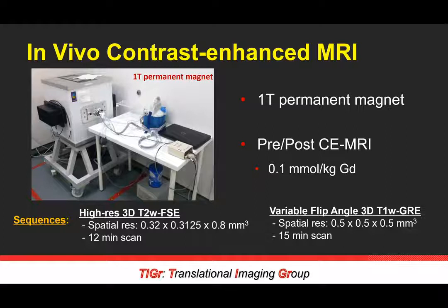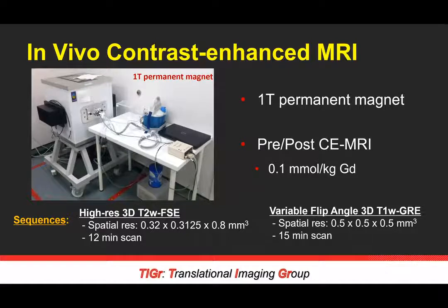For technical specifications: we're using a 3D T2-weighted fast spin echo sequence for anatomical imaging, with spatial resolution shown at the bottom. We're not using isotropic resolution for the anatomical scan — just relatively high resolution images of the placenta with a slice thickness of 0.8 millimeters. This is a 12-minute scan. The main workhorse for this study is a gradient recall echo sequence, T1-weighted, with isotropic resolution.